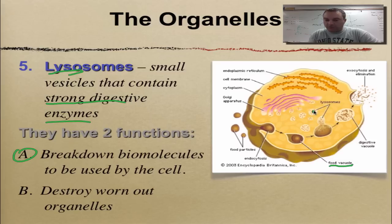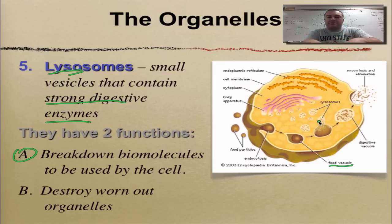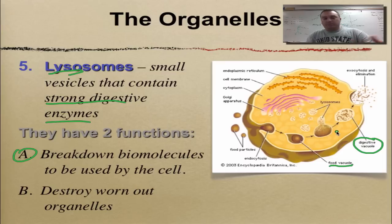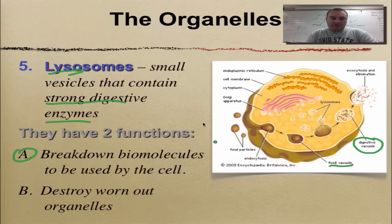A lysosome, which was made by the Golgi, is going to fuse with the food vacuole and its contents are dumped in on top of the food. The food begins to digest, nutrients are used by the cell, and any waste is eliminated. Think of a lysosome as the cell's stomach — it's going to break down food.